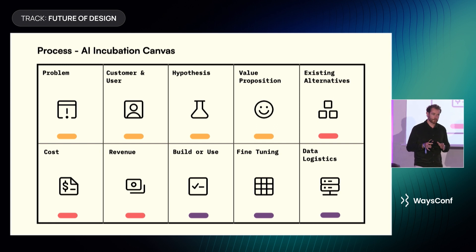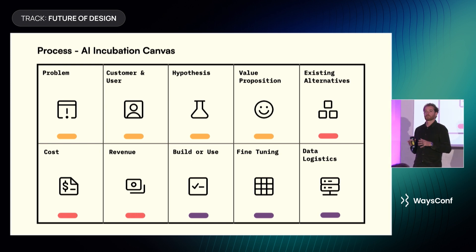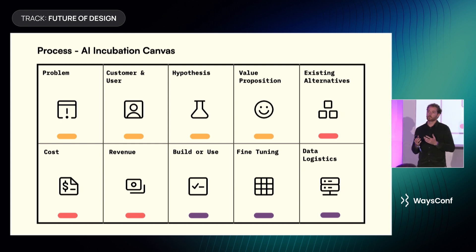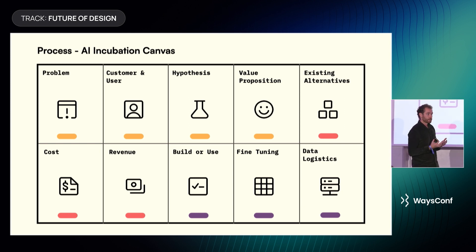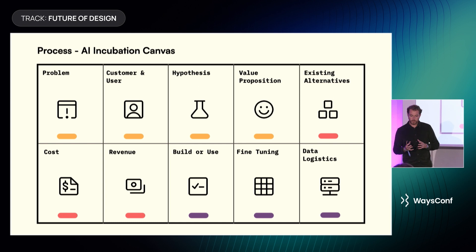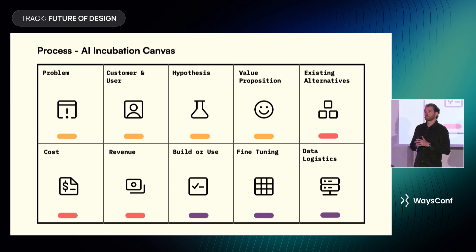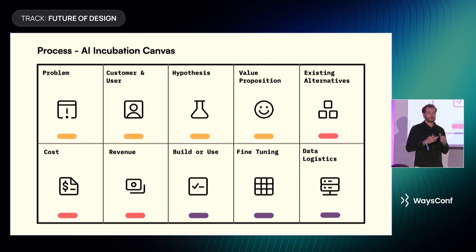This is the AI Incubation Canvas, a framework I developed to map a business case for AI projects. We have ten cards divided into three categories, with colours indicating who works best on each. Yellow is for designers, red for business, and purple for data and engineering. The 'build or use' card addresses whether it's feasible to use an existing AI model or if you need to train your own. Fine-tuning is about adjusting the model to your needs. And data logistics covers where you get your data from — internal or external sources to train or refine your model.